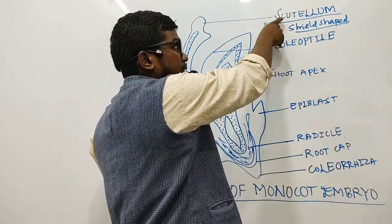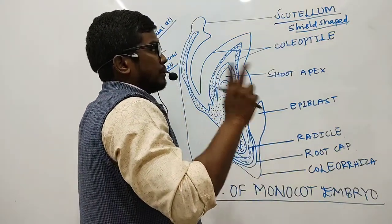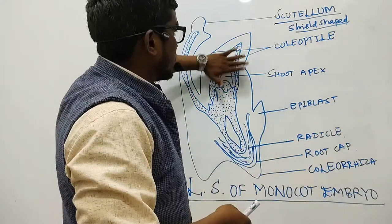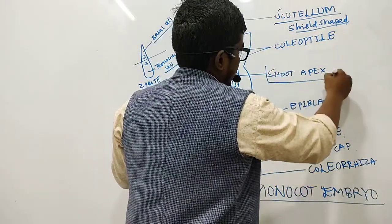The single cotyledon is referred to as scutellum and it is generally shield-shaped. Remember that the embryonal axis above the level of cotyledon is called epicotyl. In the epicotyl region we have an important part called the shoot apex.